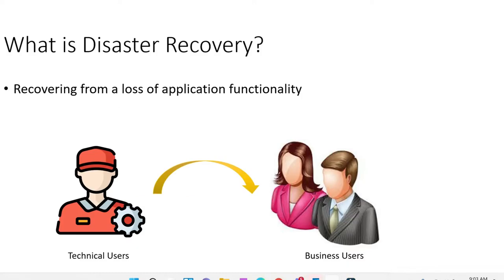So first of all, let's talk about what is disaster recovery. If we have an application which has been deployed in production, what will happen if for some reason that application goes down — all of the functionality, or some part of the functionality, is not available? Then how do we recover from that loss and what is the time that we take to recover?